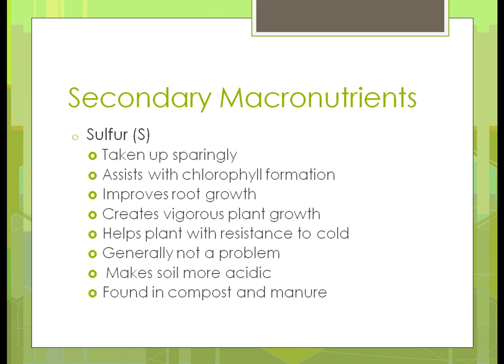Sulfur is used sparingly but helps in the formation of chlorophyll, improves root strength, and makes the plant more vigorous — giving you a larger, healthier plant. It also helps to a limited extent with cold resistance. You'd add sulfur when your pH is on the higher side — above 7, at an alkaline level of 8 or 9 — to bring the pH down, since sulfur makes the soil more acidic. You'll commonly see sulfur in compost and animal manure.